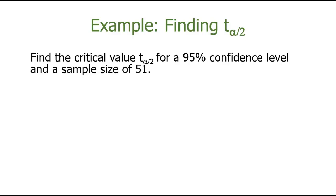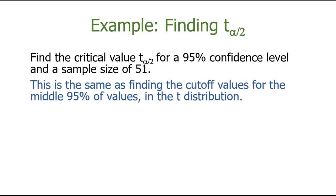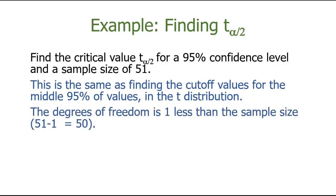Let's do an example of finding a critical value with the t-distribution. We're going to use a 95% confidence level and a sample size of 51. This is the same thing as finding the cutoff values for the middle 95% of values in the t-distribution. We need to find the degrees of freedom — that's one less than the sample size. Since our sample size is 51, our degrees of freedom will be 50.